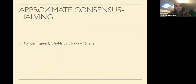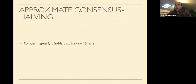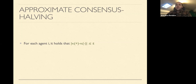Simons and Su were not the first to study the exact version of the problem, but I believe they were the first to study the approximate version — the epsilon consensus halving problem. In this approximate version, instead of requiring every agent is completely happy with the balance between plus and minus, we allow a small additive error parameter epsilon. This is the approximate consensus halving problem.